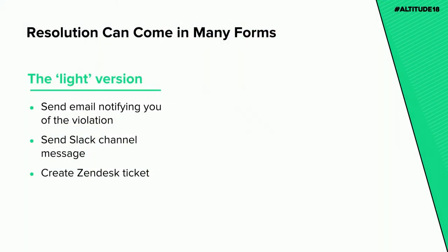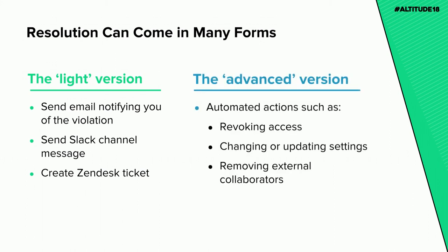Automation can come in two different forms. There's the light version — when something pops up in your environment you can simply be notified via email, a Slack message, a webhook, or even a Zendesk ticket. For today's presentation we're going to go through the more advanced version of remediation — things like revoking access, changing or updating a setting, or removing external collaborators — taking action directly on the thing that triggered the alert.